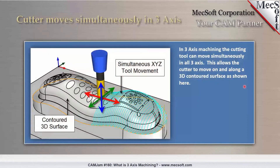Three-axis milling. Three-axis refers to the three linear axes. The three linear axes are the X-axis, which typically runs left to right, the Y-axis, which runs front to back, and your Z-axis, which goes up and down.